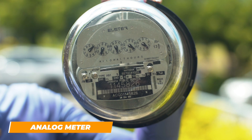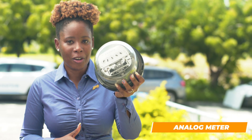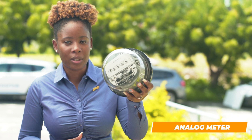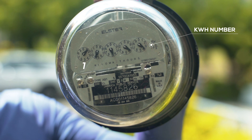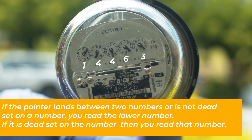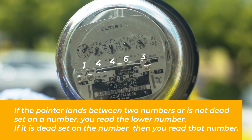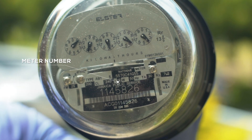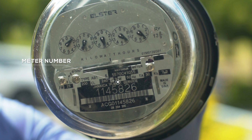So there are currently two types of meters. We have the analog meter and we have the smart meters which we are currently installing. Now for this analog meter, this is how you read it. The current reading on this meter is 14463 kilowatt hours. The meter number on this meter is in the bottom panel, which is 1145826.